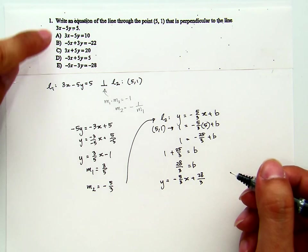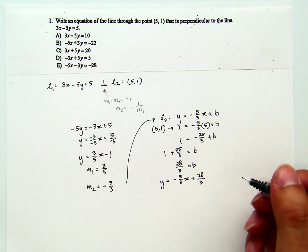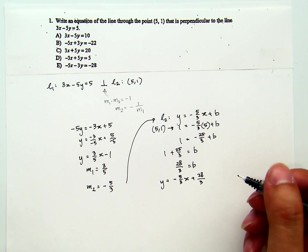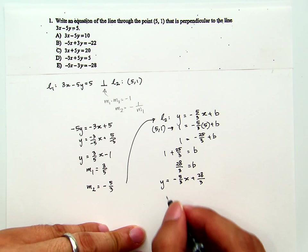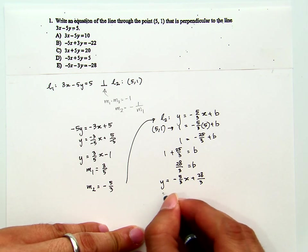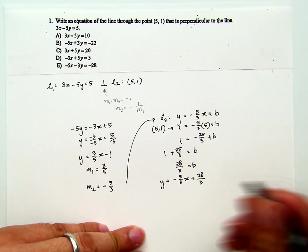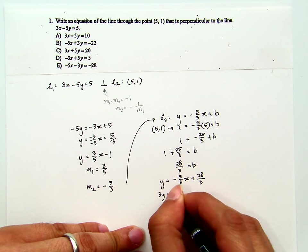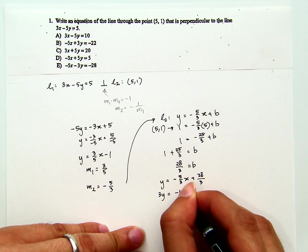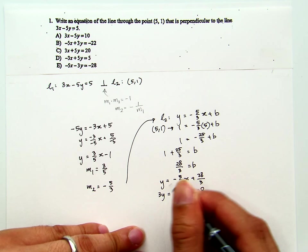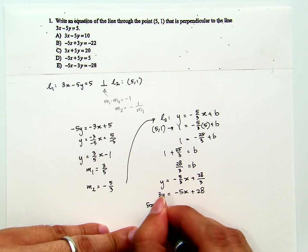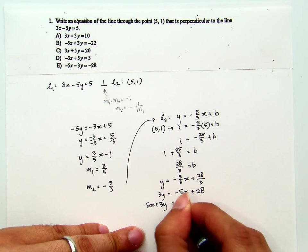Now unfortunately, we don't have that slope intercept form in our options. So what I will do, I will change this into general form. Of course, one thing I can do is multiply by 3 to get rid of the denominator. So I have 3y equals negative 5x plus 28. And then I move the 5x to the other side. 5x plus 3y equals 28.